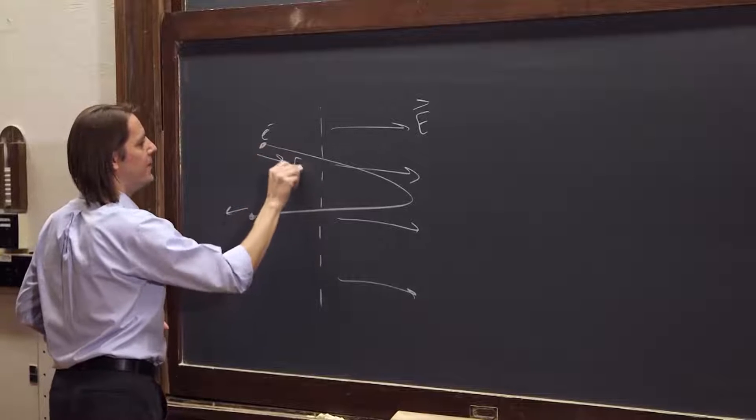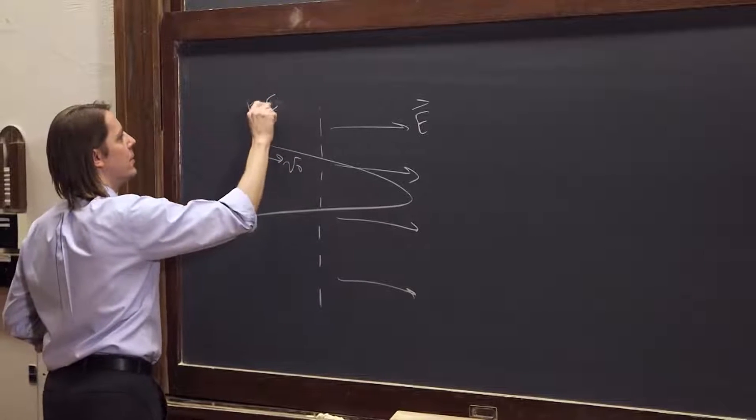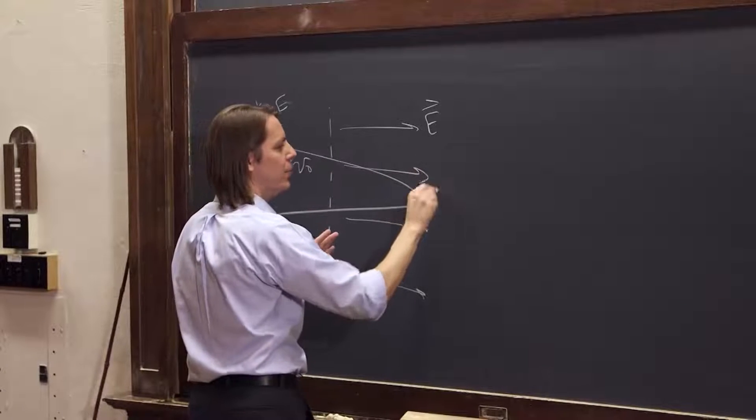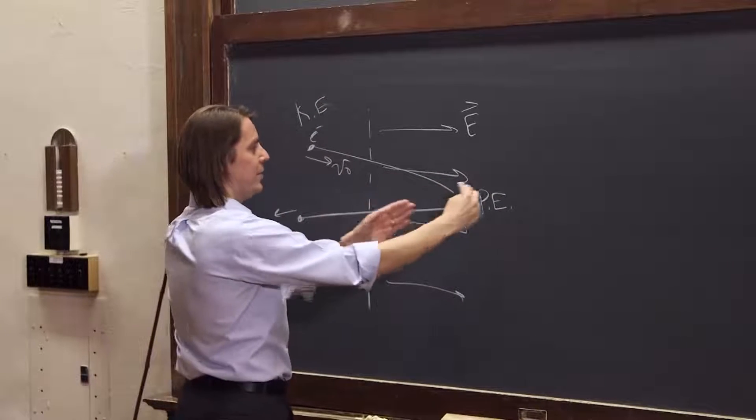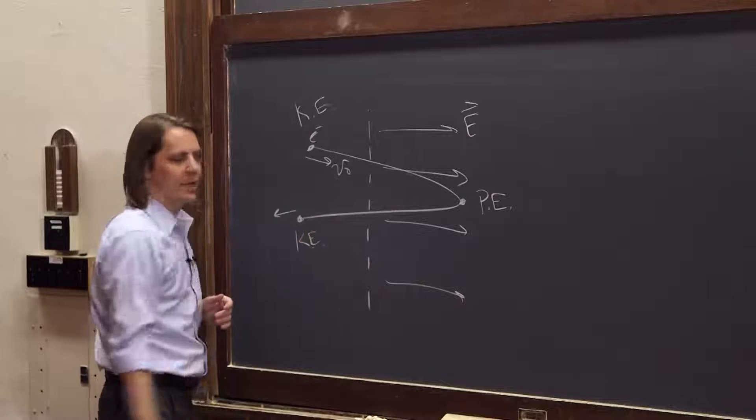It flies in with some V-naught. It has kinetic energy here. When it flies in, the electric field pushes it back. It goes to potential energy here. And then once it's just sitting there, the electric field shoves it out, pushes it out, and it goes back to kinetic energy there.